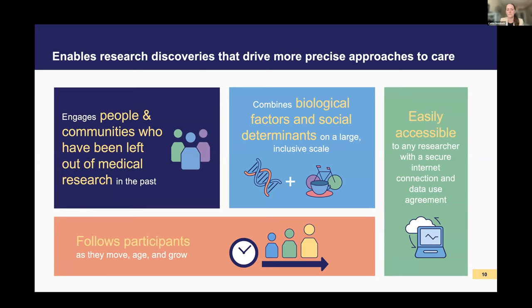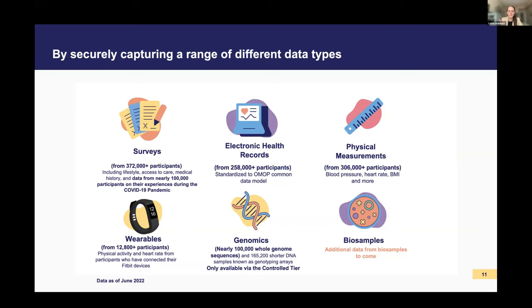Historically, the multimodal data needed to paint a complete picture of human health — whether biological, environmental, behavioral, or sociodemographic — is not easy to capture, especially to have all of this in one place. NIH is bringing this data together on a single platform, working to ensure it's not only secure and protected, but also made available to diverse researchers from a wide range of settings, particularly researchers who come from or live within underrepresented communities that bear a disproportionate burden of disease.